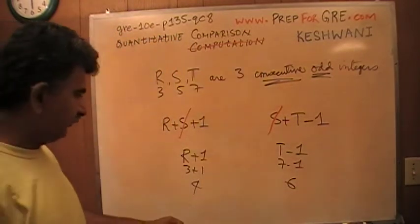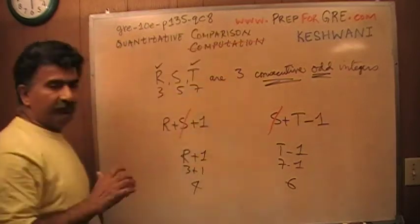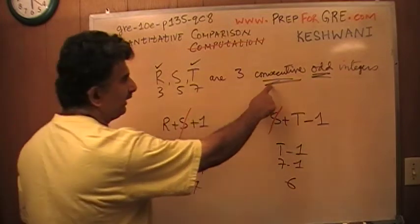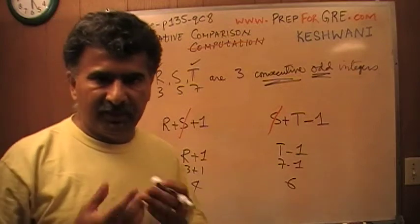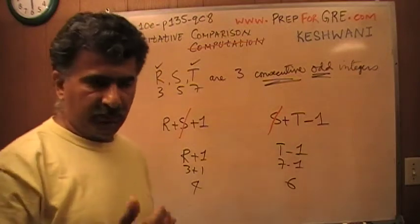You see what I mean? There is still a difference of 2 because from R to T, the difference is 4 units. S is 2 more than R because they are consecutive odd integers. Whether they are odd integers or consecutive even integers, that fact is not going to change.